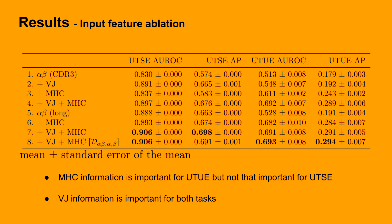We conducted also an input feature ablation study to see how the inputs affect the two tasks. From the table we can see that the MHC information is very important in the unseen epitope case, whereas the V and J information is important for both tasks.